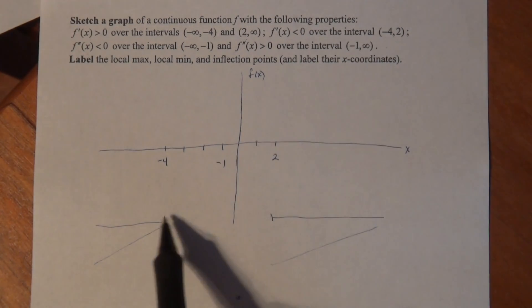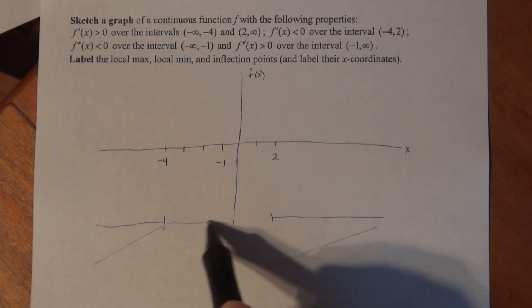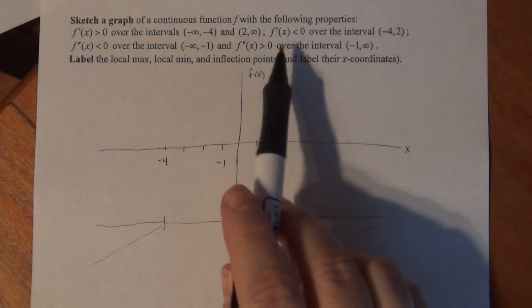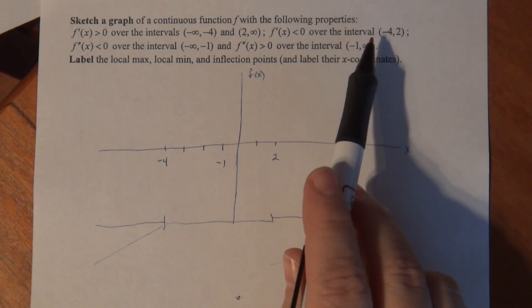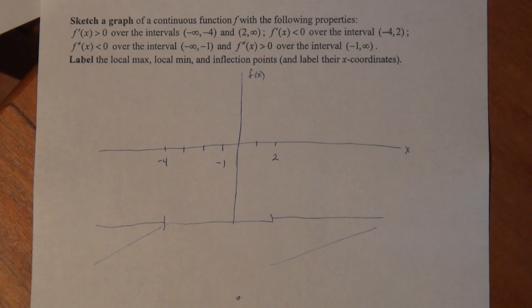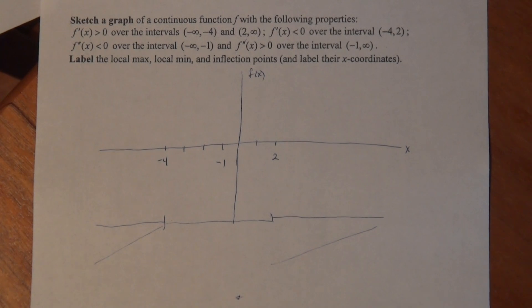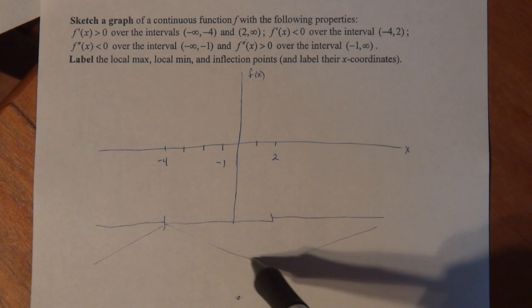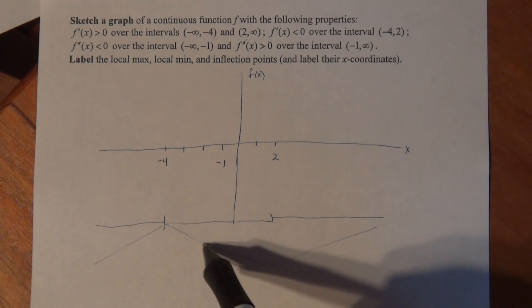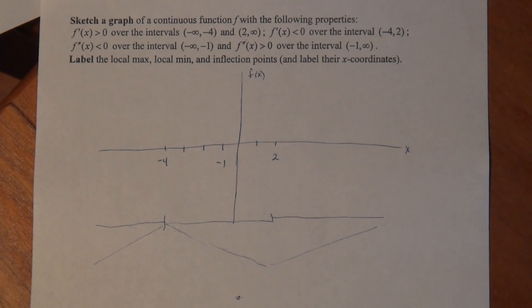Now, from minus 4 to 2, this is this one right here in the middle. From minus 4 to 2, it says that f prime is less than 0. So if f prime is less than 0, that means f prime is negative. That means the slopes of f are negative. That means that f has to be decreasing. So I'm going to start decreasing from the top left and go down to the bottom right. So you can kind of see a shape of the graph right there. It's sort of there.